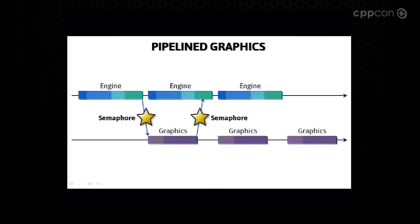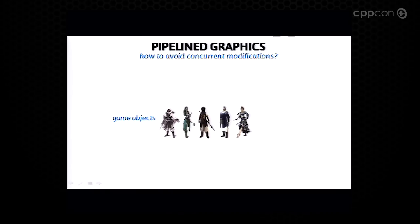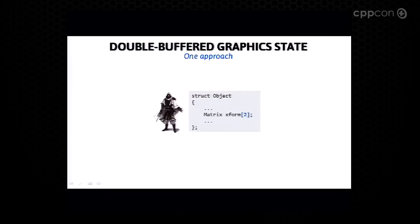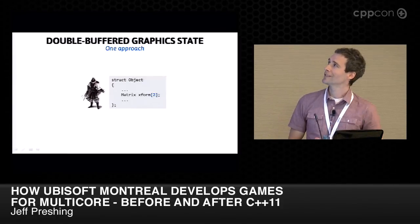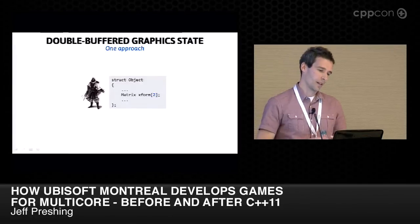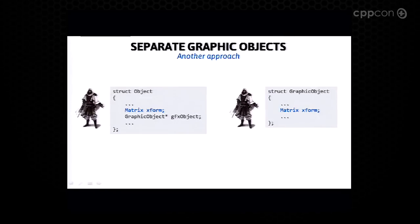You might wonder how to avoid race conditions with concurrent modifications. Two simple answers: one approach is to double-buffer any state relevant to both threads — for example, an object's position matrix might have two copies, and each frame each thread knows which copy it's working with, alternating back and forth. The next approach is to have graphics objects that are separate from the engine's objects, and simply copy the needed state at the beginning of each frame.